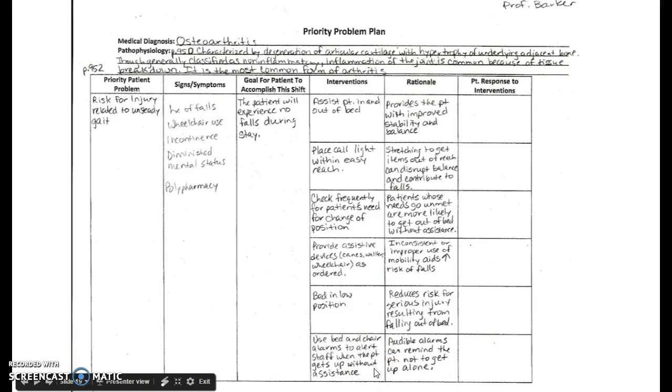So then we have to provide the rationales. They're going to match the intervention. Why does assisting the patient in and out of bed help prevent a fall? Well, it provides the patient with improved stability and balance. Placing the call light within easy reach. How is this going to prevent a fall? Because stretching to get items that are out of reach can disrupt balance and contribute to falls. Checking frequently for a patient's need to change position. Why is that going to prevent falls? Well, patients whose needs go unmet are more likely to get out of bed without assistance. And so you can see each rationale matches up with the intervention. Why do we want to provide?